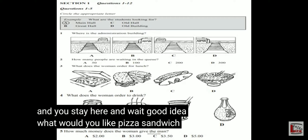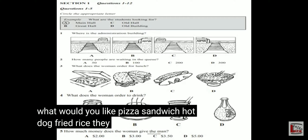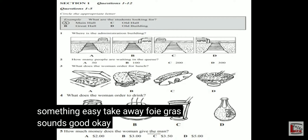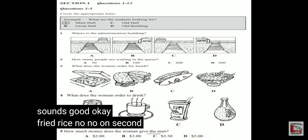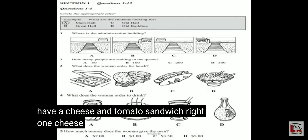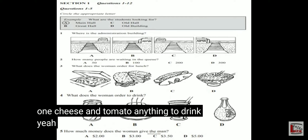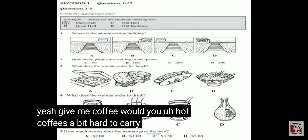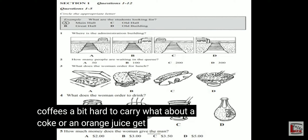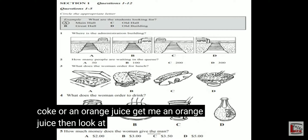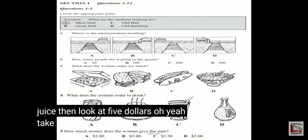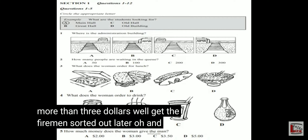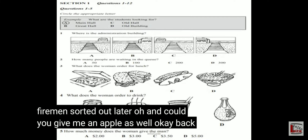What would you like? Pizza, sandwich, hot dog, fried rice — they do everything. Something easy. Takeaway fried rice sounds good. OK, fried rice. No, on second thoughts, I'll have a cheese and tomato sandwich. Right, one cheese and tomato. Anything to drink? Give me coffee. Hot coffee's a bit hard to carry. What about a Coke or an orange juice? Get me an orange juice then. Look, here's five dollars. Take two dollars back — shouldn't cost me more than three dollars. Well, I'll keep the five, we'll sort it out later. And could you get me an apple as well? OK, back in a minute.